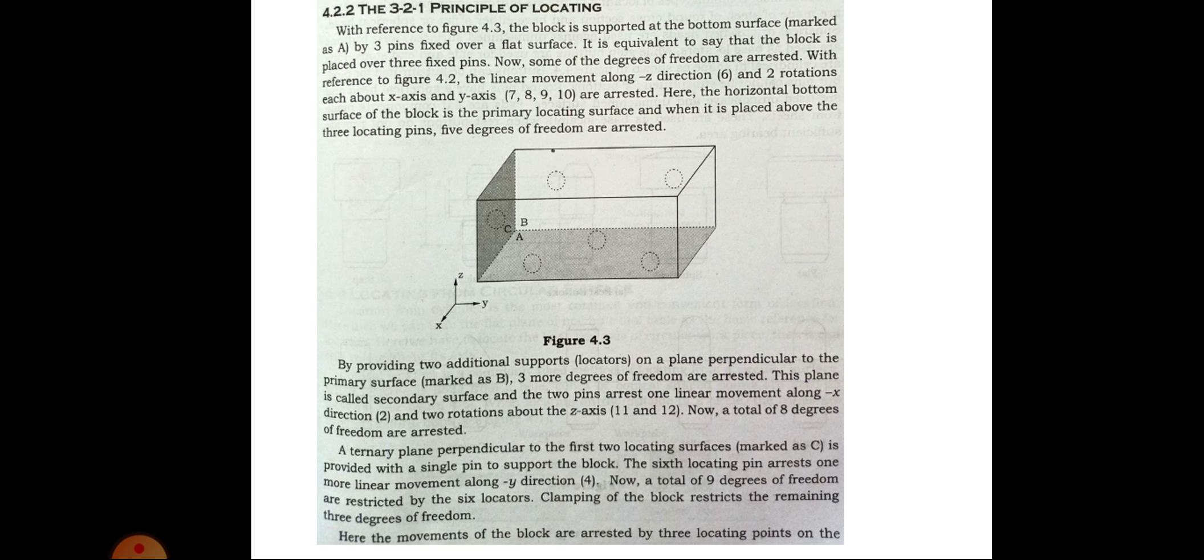Clamping of the block arrests the remaining three degrees of freedom. Here, the movements of the blocks are arrested by three locating pins on the primary locating surface marked A, two locating pins on the adjacent surface marked as B, and another one locating point on the tertiary locating surface marked as C. Hence, location of the rectangular block can be done using six locating points. This method of using 3, 2, 1 locating points on three adjacent sides is known as 3, 2, 1 principle of locating.